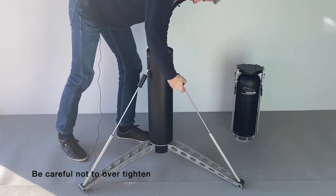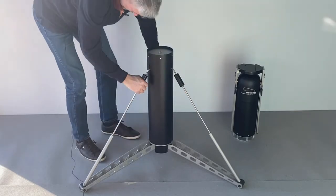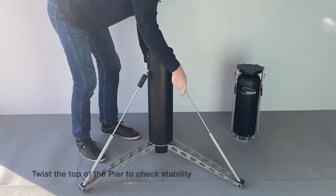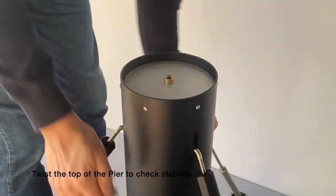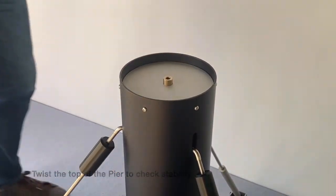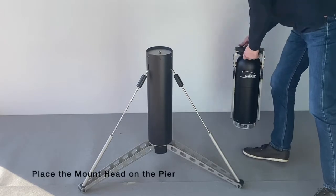When you have tightened all three rods, try to feel the stability of the pier by grabbing the top of the column and trying to twist it a bit from side to side. If needed, tighten the rods a bit more.